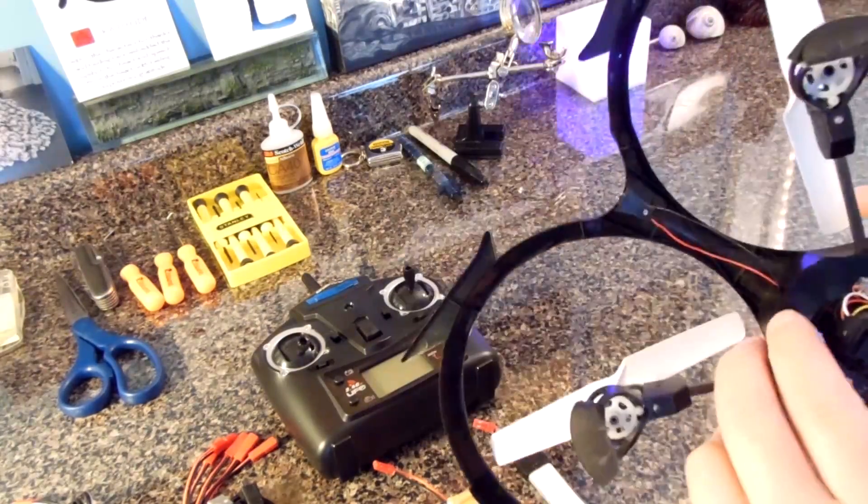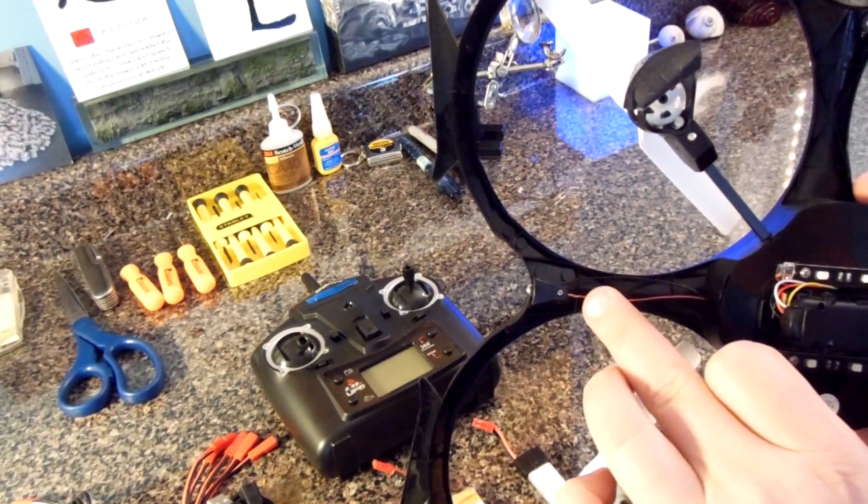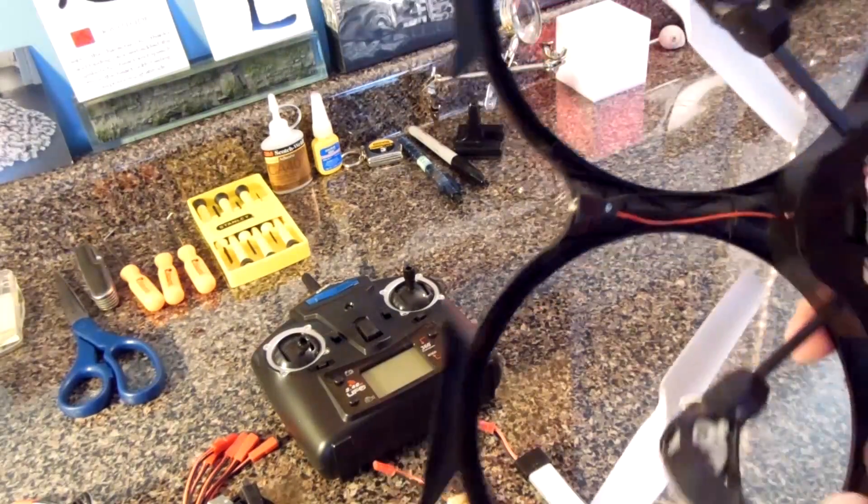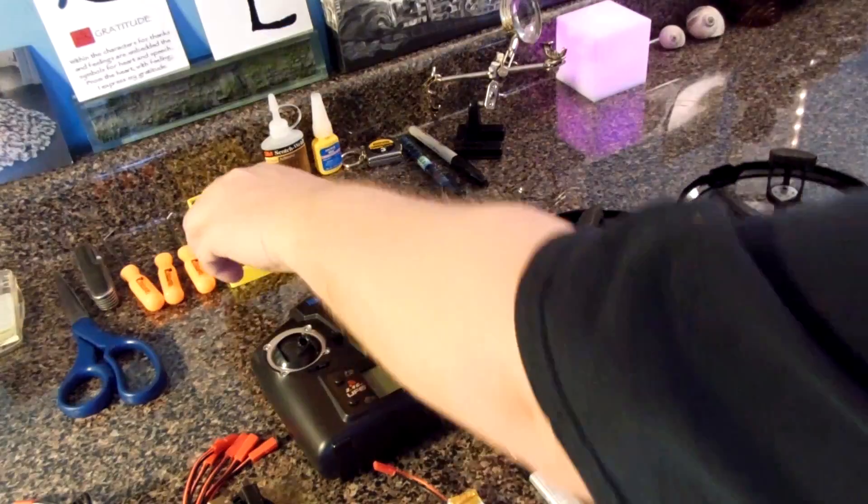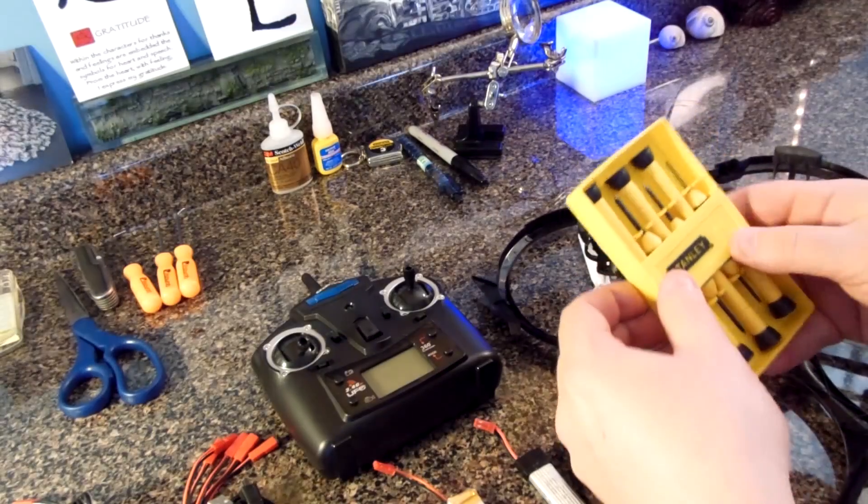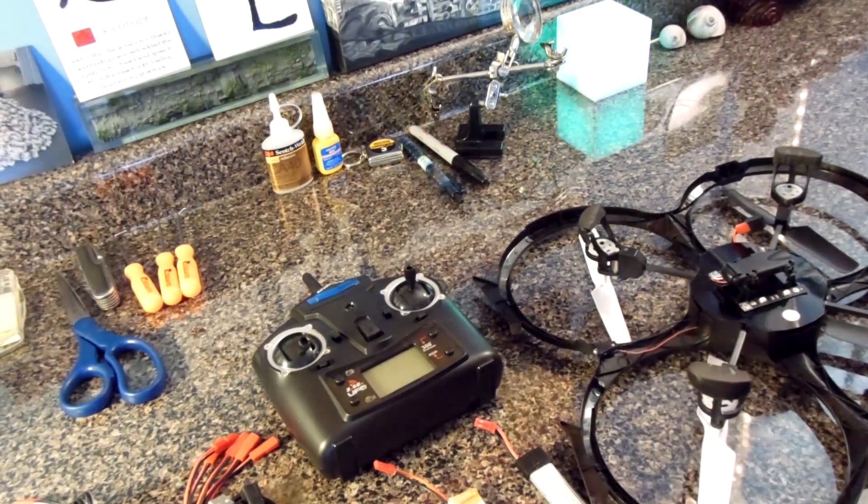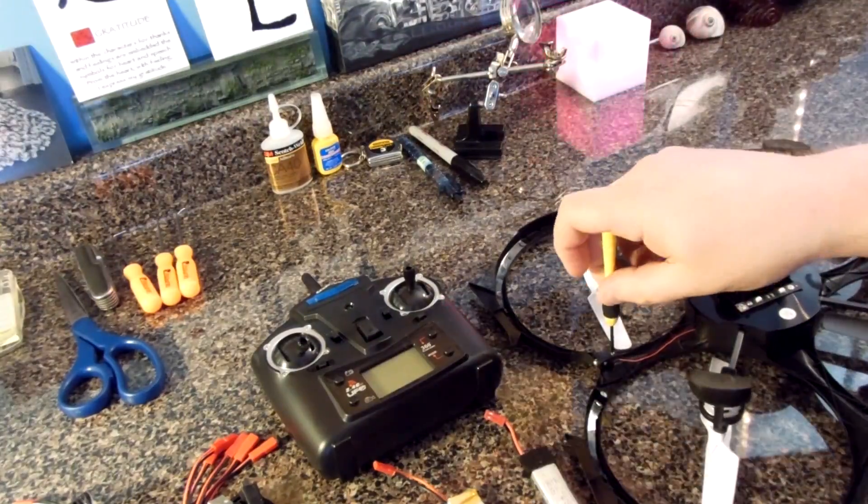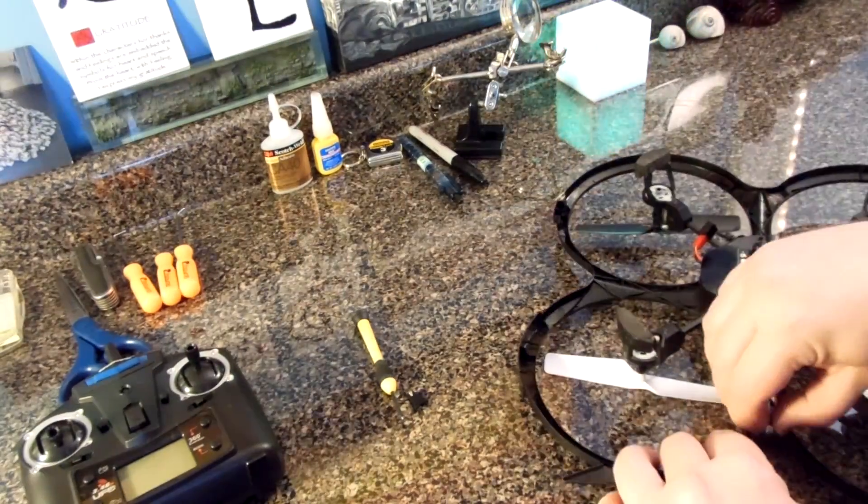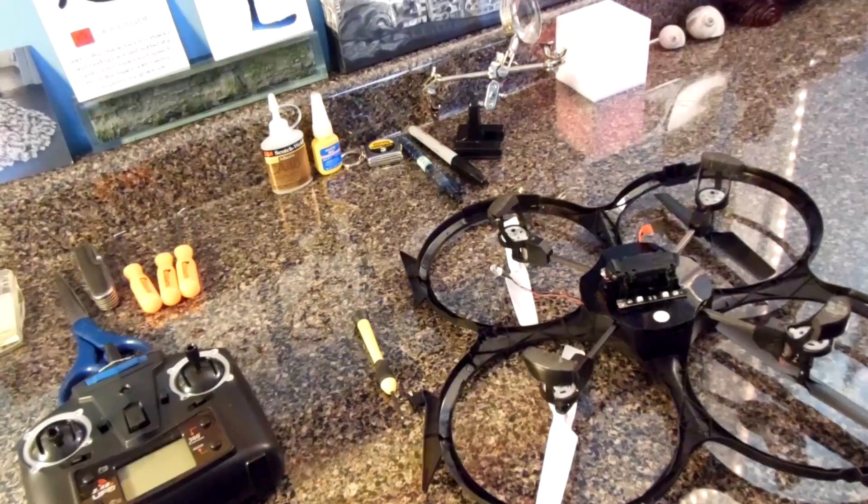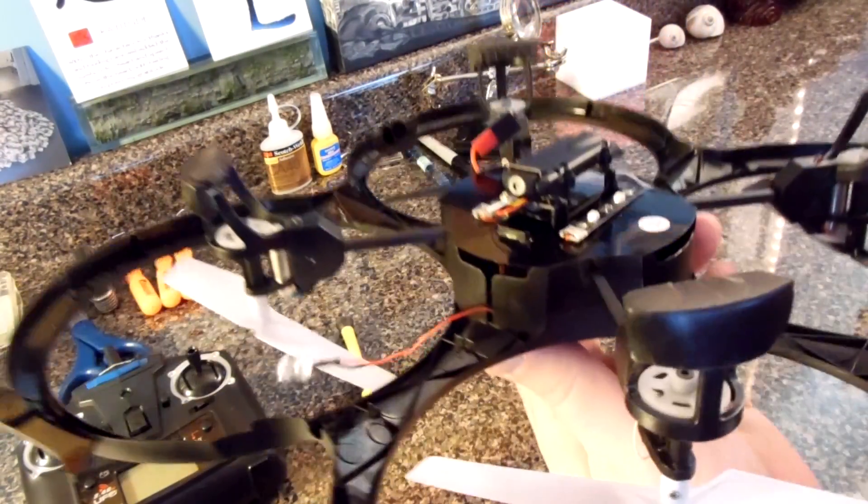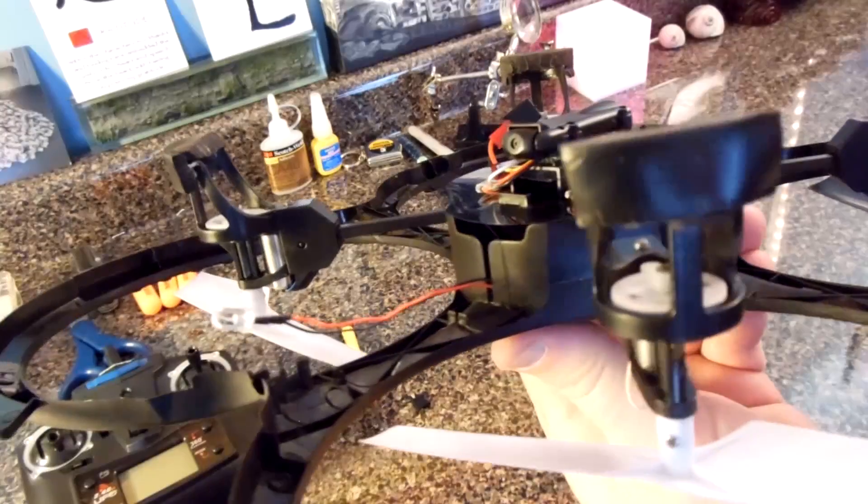So let's start by removing the housing, which is also the prop guard. First we have to remove the small LED light that's attached with a single Phillips head screw. Now we're going to remove the plastic housing from the metal frame.